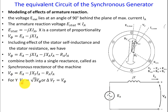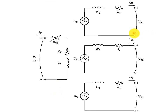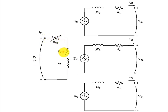For a Y-connected machine, the terminal voltage VT = √3 × V_phase. For a delta-connected machine, VT = V_phase. Here we can show the three-phase equivalent circuit of the synchronous generator, where XS accounts for all reactance due to internal leakage flux and armature reaction, and RA accounts for the copper losses. For each phase the voltage is reduced accordingly.